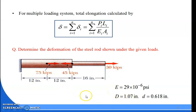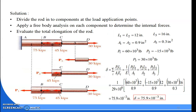Kips is a unit of force, and 1 Kip equals 1000 pound-force (lb). Now, take a look at the solution part.